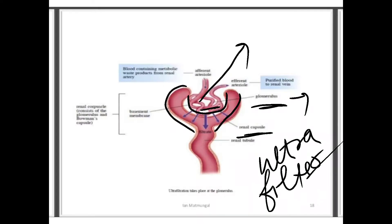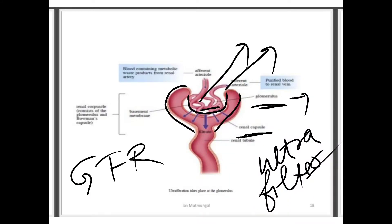During ultrafiltration, a large amount of water along with certain useful compounds and certain harmful waste products is filtered out into the Bowman's capsule. The filtrate so formed is called glomerular filtrate. In a normal adult, the rate of filtration is called GFR — glomerular filtration rate. The nephric tubule is formed of three parts.